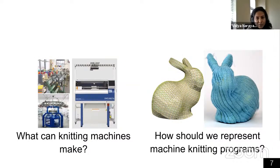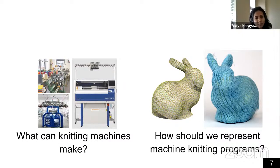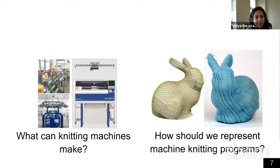There's no obvious way to figure out if a particular design can even be made on a particular machine, and there's no unified representation across these machines and systems to talk about knitting. In order to tackle these challenges, we need to understand how these machines work, how they're made, and what they can make. That's what I'll talk about today, and I'll also briefly talk about how we should represent machine knitting programs, especially when making complex 3D shapes.